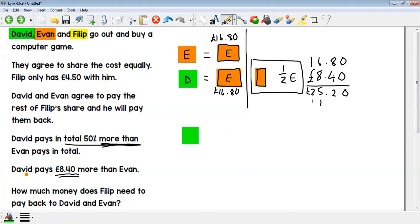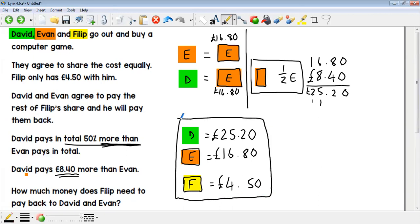Now some of you got to this point and that's really well done, but in terms of what the question is actually asking is a whole other thing together. So what we've got is Evan equal to £16.80, and then we've got Philip still who only is contributing £4.50. At the very start of the question it says they're going out to buy a computer game and it says that they share the cost equally.